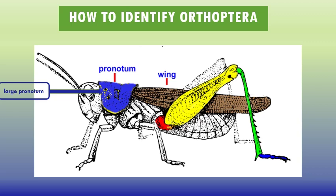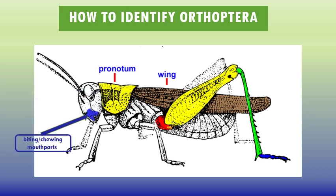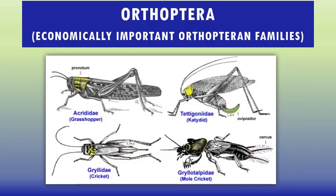Orthoptera have biting and chewing mouthparts. We will cover four economically important Orthopteran families: Acrididae, Tettigoniidae, Gryllidae, and Gryllotalpidae.